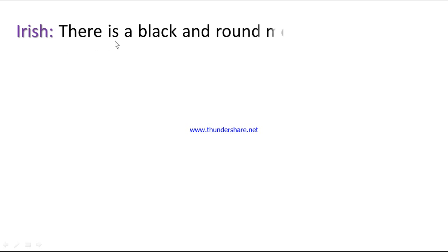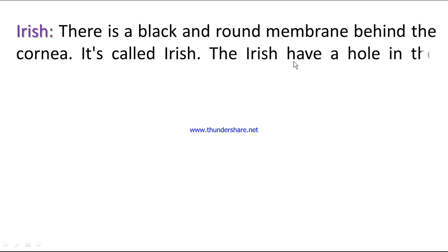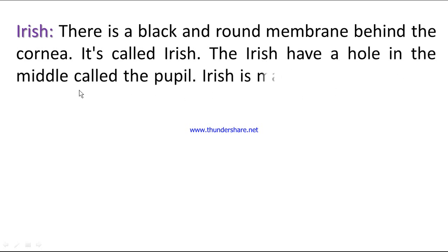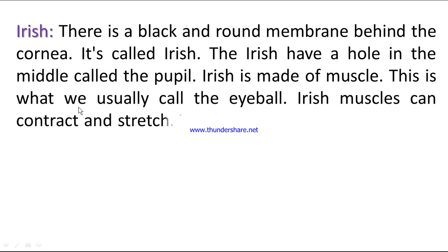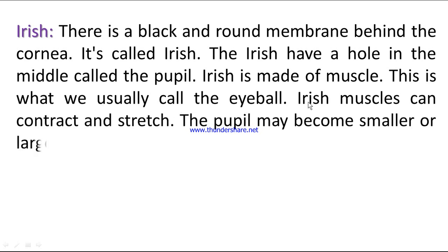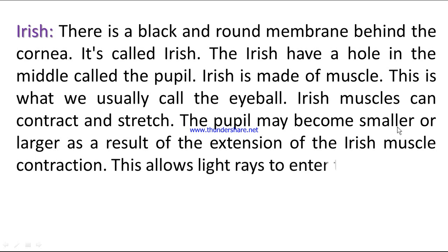Iris: there is a black, round membrane behind the cornea called the iris. The iris has a hole in the middle called the pupil. The iris is made of muscle — this is what we usually call the eyeball. Iris muscles can contract and relax, causing the pupil to become smaller or larger. This allows light rays to enter the retina.